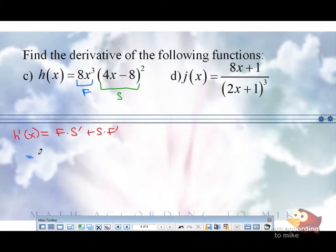So it's the first, 8x cubed, times the derivative of the second. Just putting a prime on it. The quantity 4x minus 8 squared. Plus the second times the derivative of the first. Prime. I said prime.